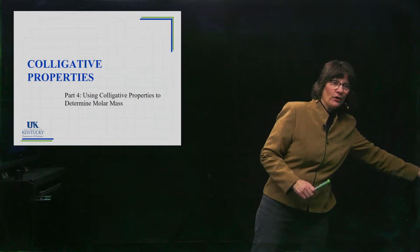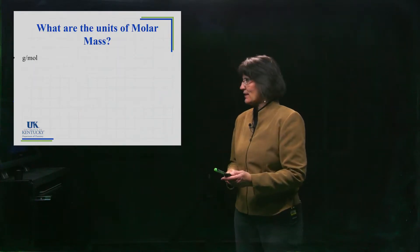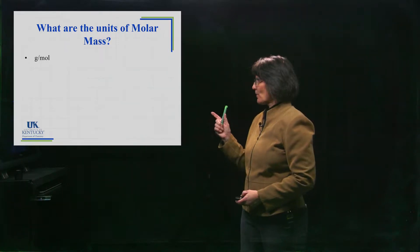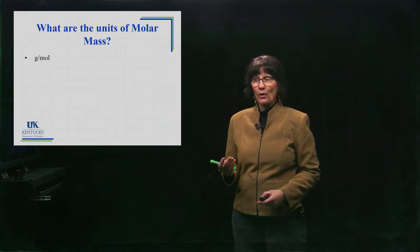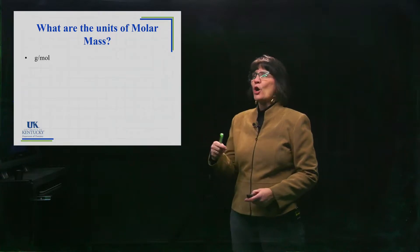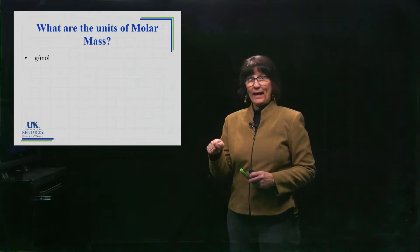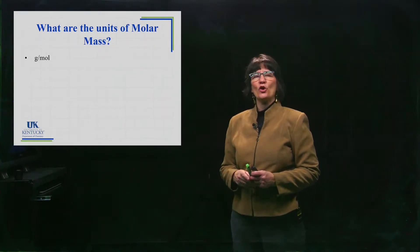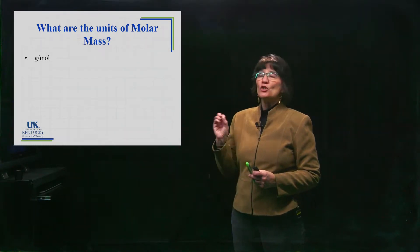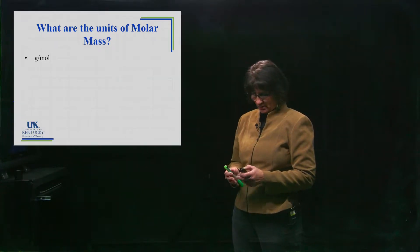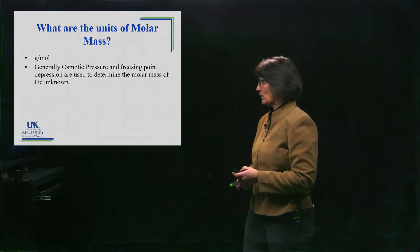So let's see what we've got here as far as a process. We know the units of molar mass are grams per mole. And so if we can know the mass of the sample we put in there, that's no big deal. You weigh it out. You know how much mass of that unknown compound you put in and you knew how many moles were in there, then you would be able to determine the molar mass of that substance.